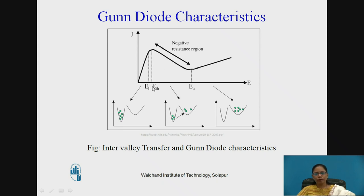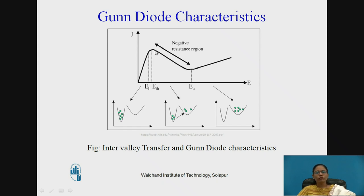Before the threshold, when E is less than EL, there is a linear relationship between J and E. As voltage increases, current increases, up to the threshold point E_th. After that, even if voltage or E is increased, the current J will drop. This region is called the negative resistance region.